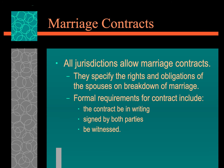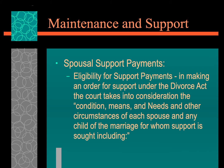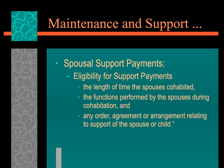All jurisdictions allow marriage contracts, which specify the rights and obligations for a spouse upon breakdown. The formal requirements are that it must be in writing, witnessed by both sides, and signed. Regarding maintenance and support, both federal and provincial legislation govern maintenance and support. The eligibility of spousal support is based upon the length of time the couple cohabited, the functions performed during cohabitation, and any agreement regarding support of a spouse or child.